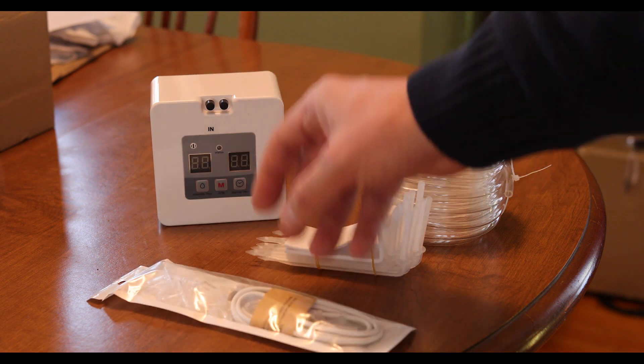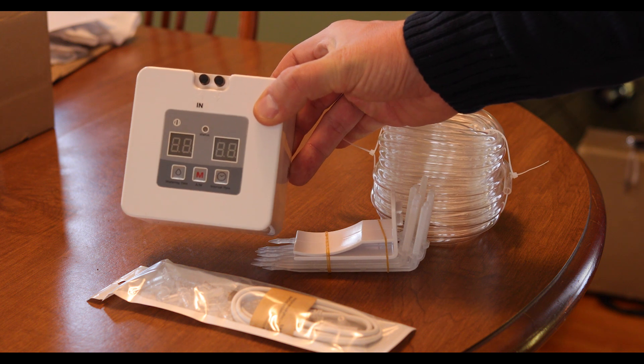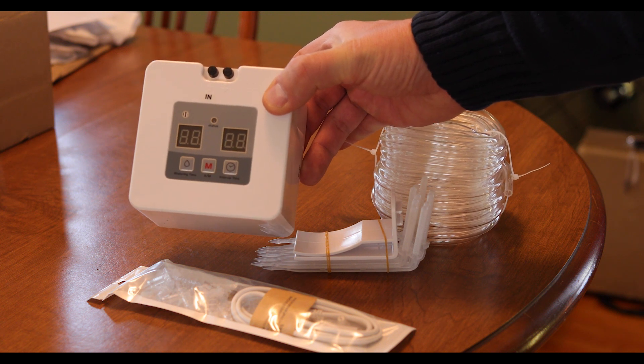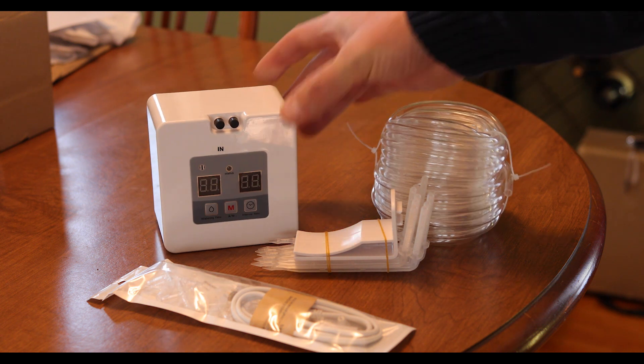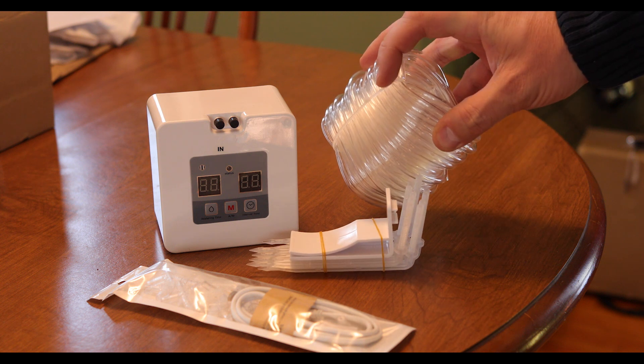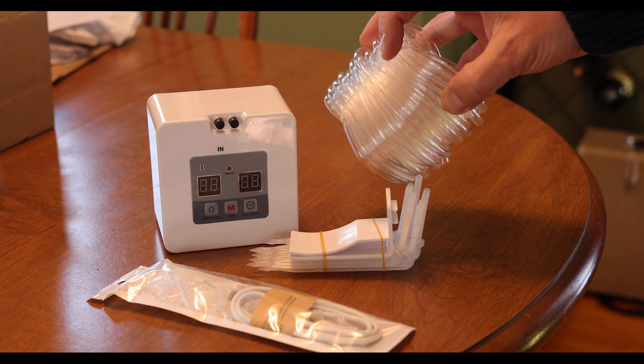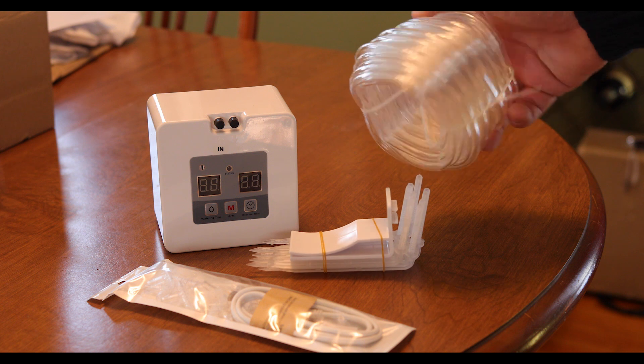And this is the controller and pump module. So the first thing you're going to want to do is cut your tie wraps off of the plastic hose and let this start relaxing, because it makes it a lot easier to work with.